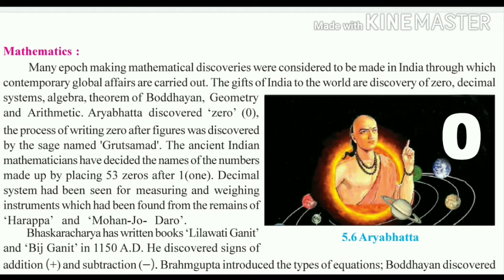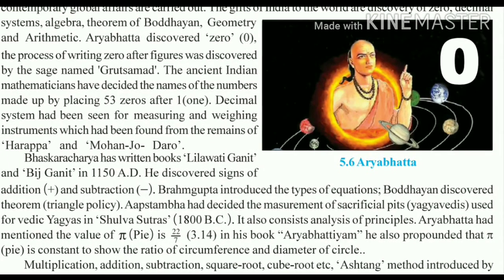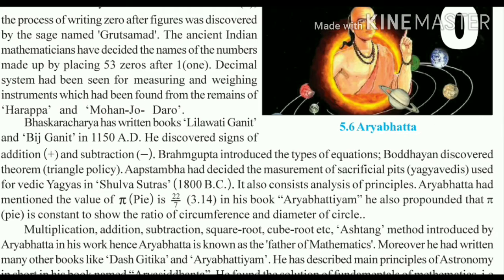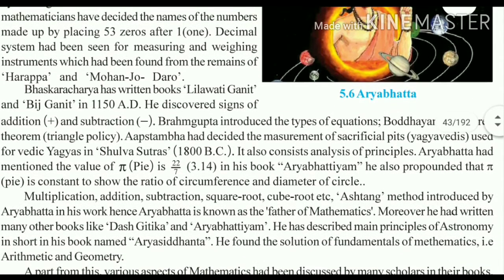Prachin Bharat Ghanit Shastra was well-established in the field of Mathematics. Bhaskaryacharya wrote books on Mathematics — Lilavati Ganit and Beej Ganit — in 1150 AD. He discovered the signs of addition and subtraction; he invented the plus and minus signs.